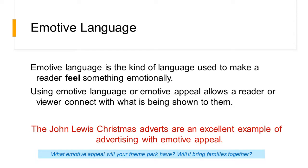Emotive language. Emotive language is the kind of language used to make a reader feel something emotionally. Using emotive language or emotive appeal allows a reader or viewer to connect with what's being shown to them. The John Lewis Christmas adverts are an excellent example of advertising with emotive appeal. What emotive appeal will your theme park have? Will it bring families together, or what other ideas might you want to use?